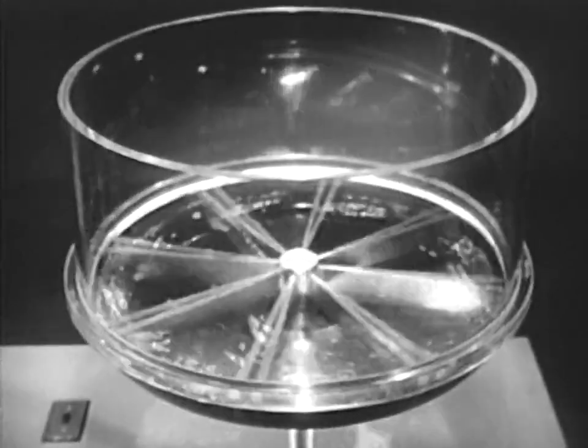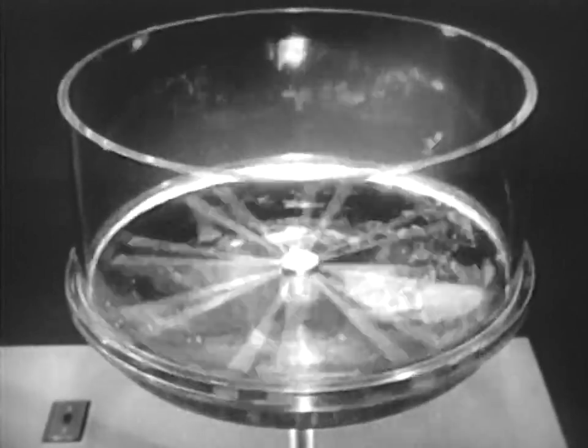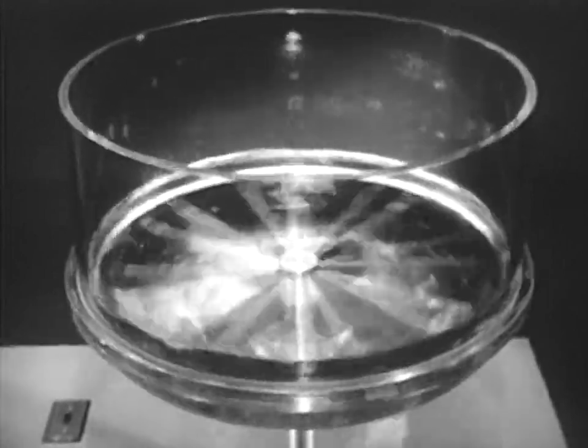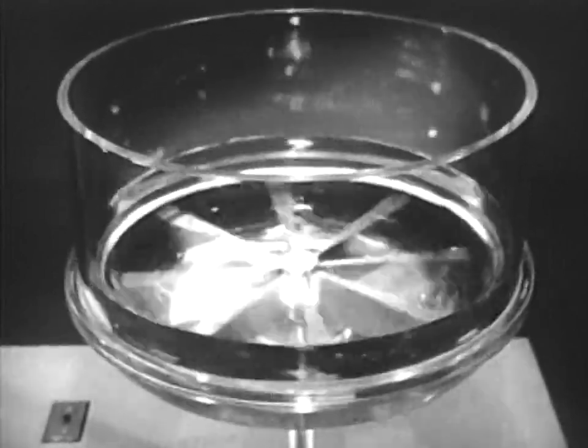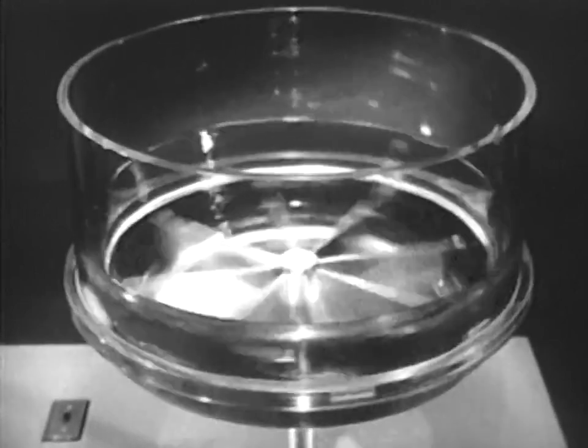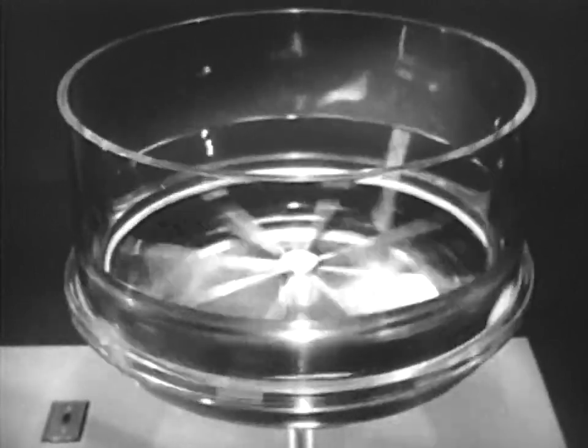By attaching a set of veins which radiate outward from the center to the bowl, we can increase the tendency of the oil to rotate with the bowl. This causes more energy to be transferred from the liquid.